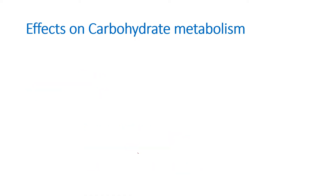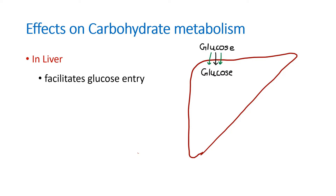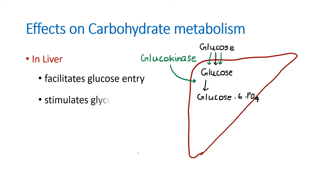In the liver, insulin facilitates glucose entry by activating an enzyme called glucokinase. Glucokinase not only facilitates the entry of glucose, but also converts it into glucose 6-phosphate. Because of this step, it is easier for insulin to stimulate glycolysis, so that glucose 6-phosphate will be converted to pyruvate.